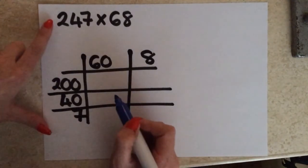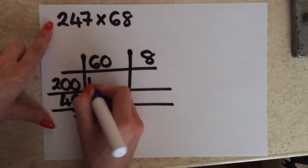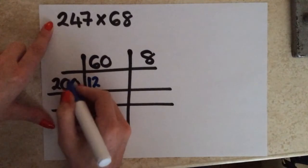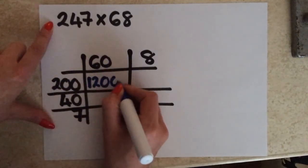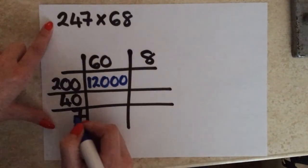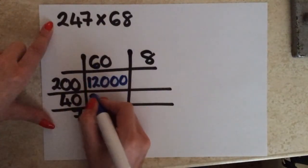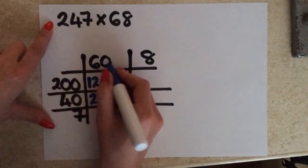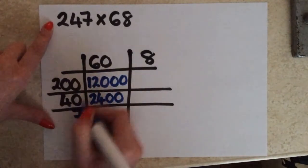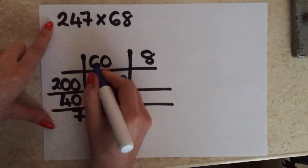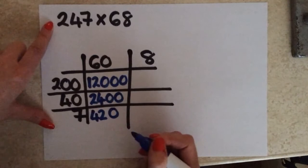So I'm going to multiply my 2 by my 6: so 2 times 6 is going to give me 12, and then I've got 3 zeros, so I'm going to write 12,000. Then I'm going to multiply 4 by 6, which is 24, and then I've got 2 zeros — so that's 2,400. And then I'm going to multiply 7 by 60: so 7 times 6 is 42, and then I've got 1 zero, so that's 420.